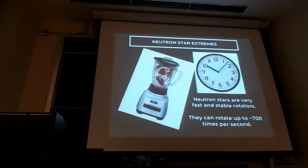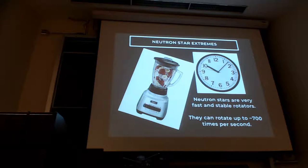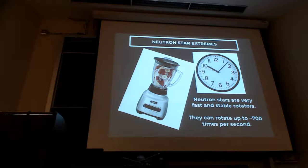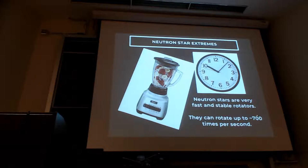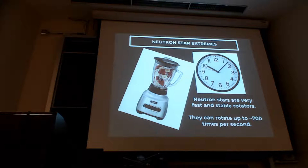On top of being small and very dense, these stars also rotate — and they rotate incredibly quickly and very stably. The typical frequency is something like your typical kitchen blender if you use a very good one. The fastest neutron star we know of rotates something like 700 times per second.